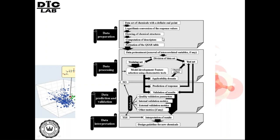Starting with the chemical structure, we compute descriptors using an appropriate algorithm and prepare the QSAR table. We do data curation, descriptor thinning, and data pretreatment — that is, removal of intercorrelated and redundant variables. Then we divide the dataset into training and test sets. Training set compounds are used for model development and learning. Once the model is developed, it can be used to predict test chemicals not used for model development. We have observed experimental values for test compounds, which help judge the predictability of the model. While applying the model for test chemicals, we must check for applicability domain.